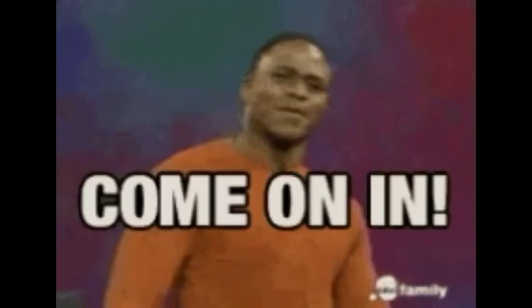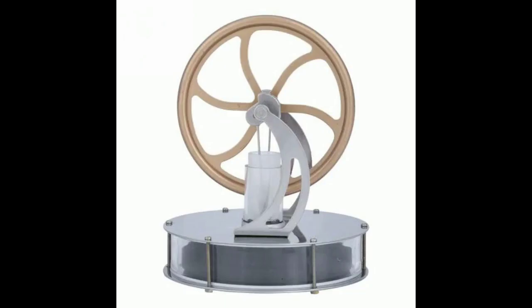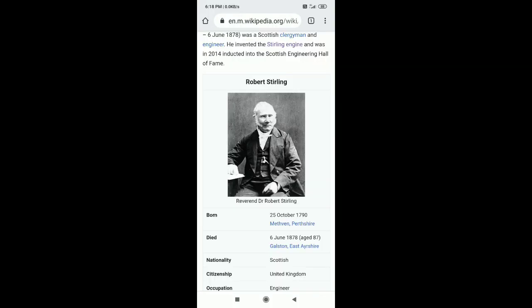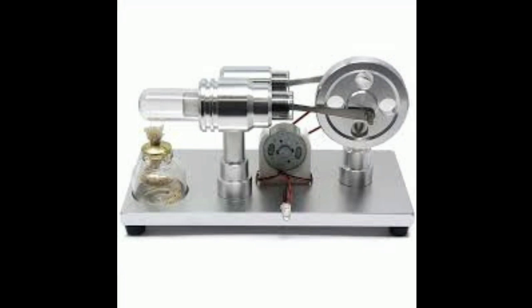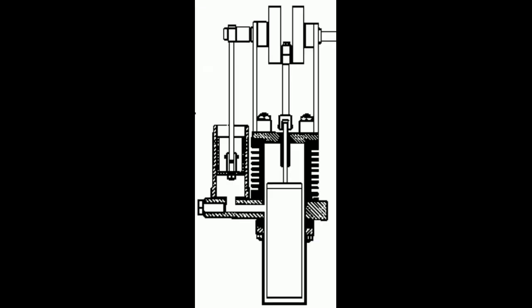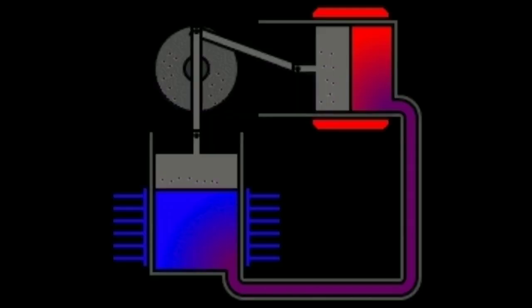Hi, welcome to this video about Stirling engines. Robert Stirling was a Scottish scientist who invented the Stirling engine on October 25th, 1790. The engine was developed in the 1816 to 1860s period. Now I'm going to explain the different types.